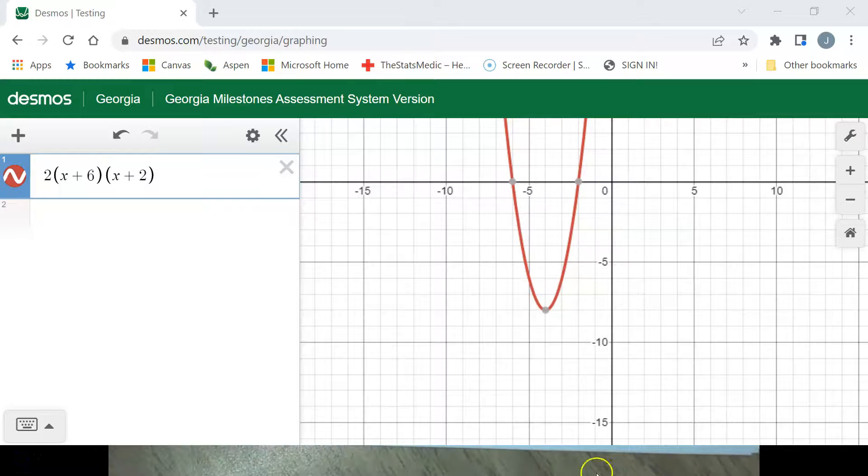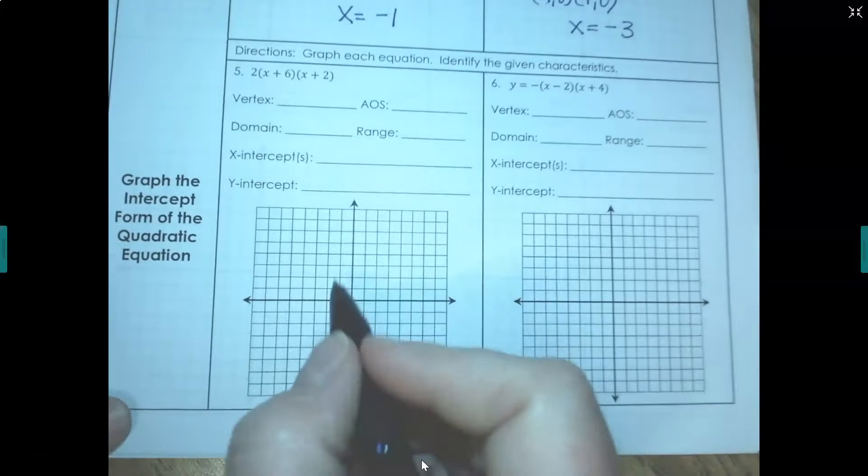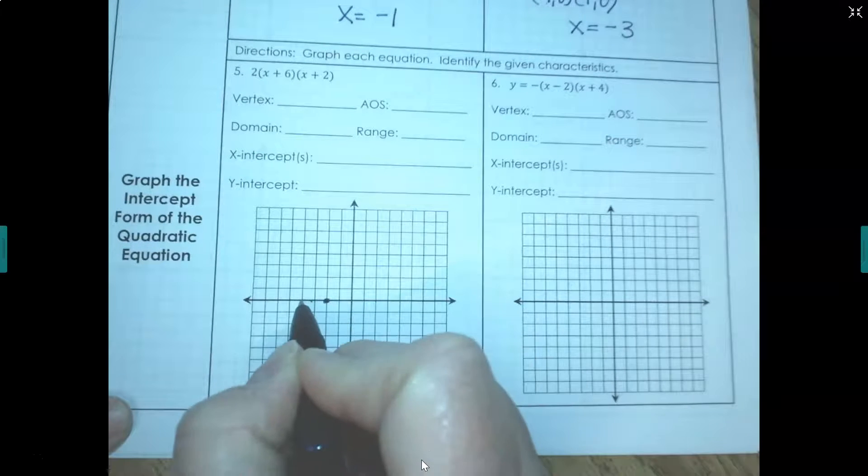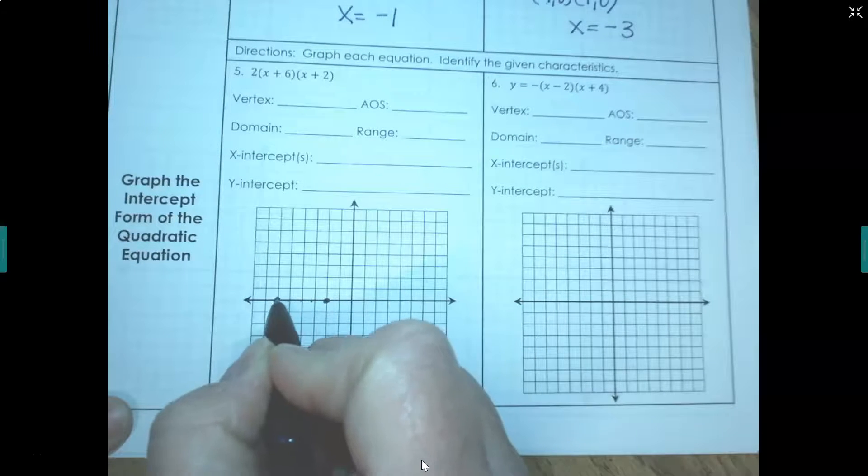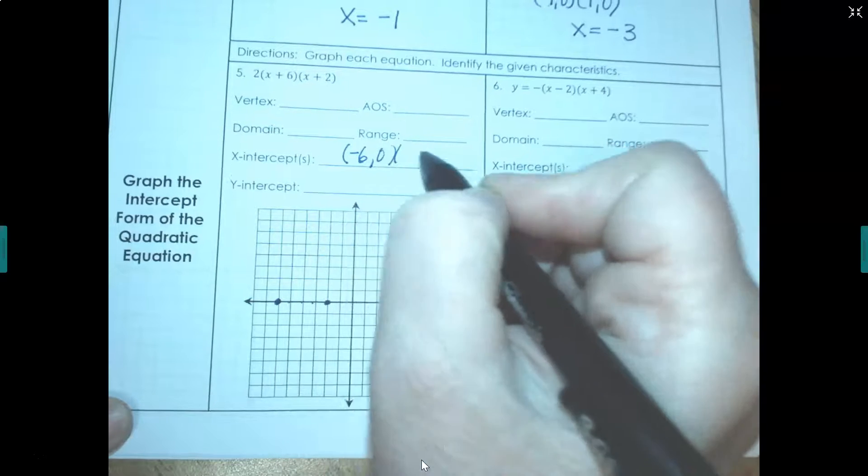So here we have the graph. We want to get a couple things out of this. Let's go ahead and get our x-intercepts at negative 6, 0 and negative 2, 0. So we got negative 2, 0 and negative 6, 0. So we actually know this answer right here because we just plotted these.